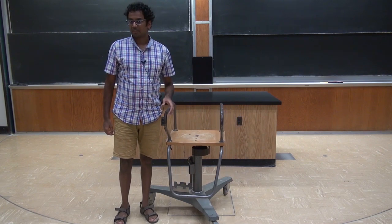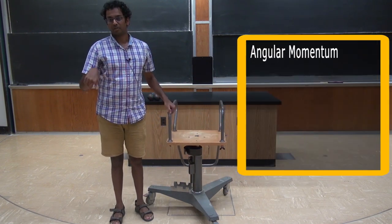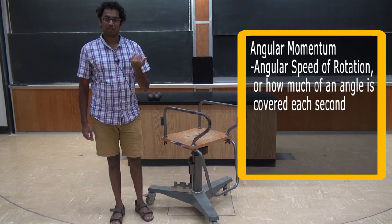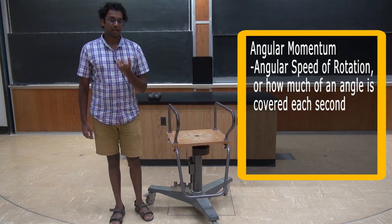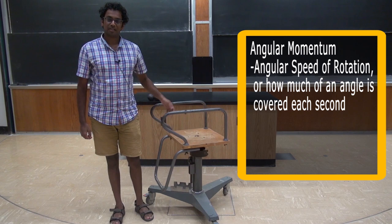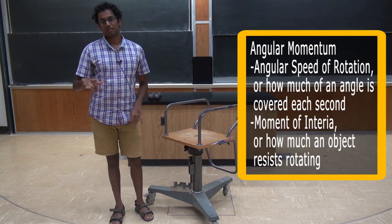So angular momentum is a physical quantity that tells you, that describes the way in which you are rotating. So it depends on two things. It depends on the angular speed of your rotation, that is how much of an angle you are covering in each second. And it also depends on the resistance that your body is offering to the rotation. This is known as the moment of inertia.